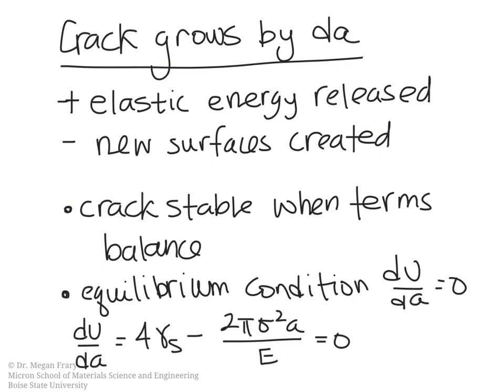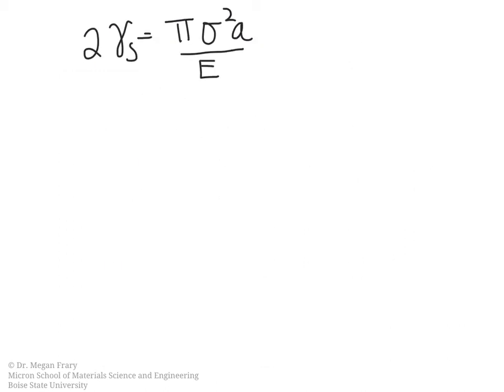Because we had an expression for delta U in terms of A, we can take the derivative to get an expression for dU/dA. That gives us 4 gamma_s, the surface energy term, minus 2 pi sigma squared A divided by E, the Young's modulus, and we set this equal to zero. We can then rearrange to find the stable crack length — this is the balance between the surface energy term and the elastic strain energy term.